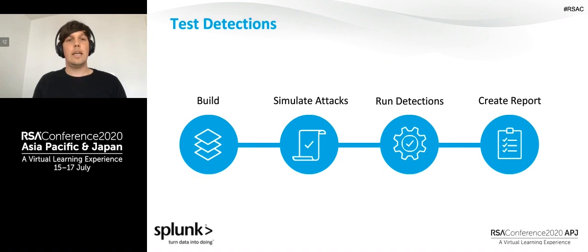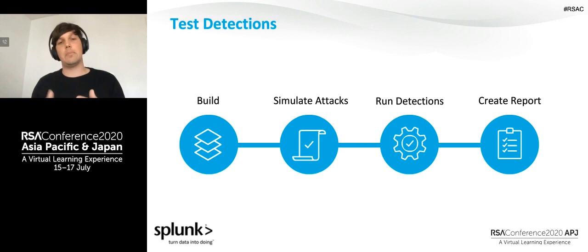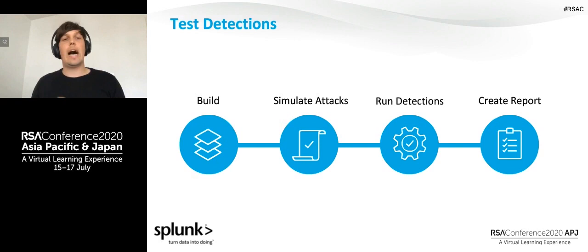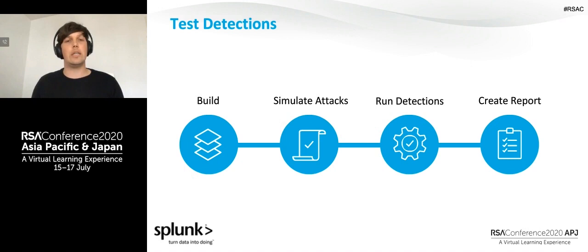There's a lot of discussion about where to test detections. Some say in a production environment, others say in a detection lab environment. In my opinion, for developing and testing detections, I recommend using the detection lab environment, because detection engineers want full control over the systems — to be able to attack and compromise the system, or change parameters that wouldn't be allowed in production. I don't know how many of you were allowed to run Mimikatz on the production domain controller — probably nobody.